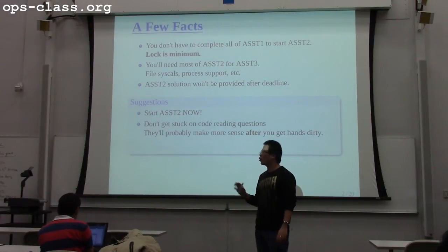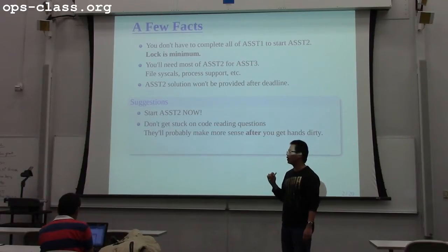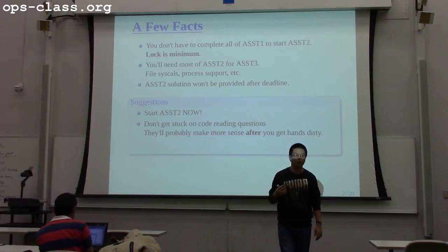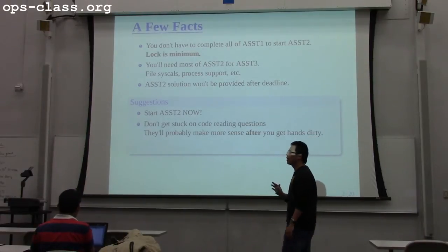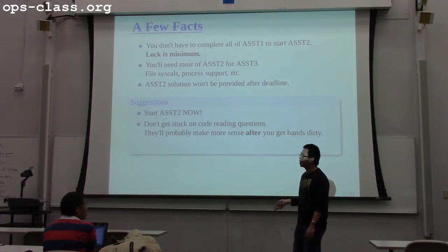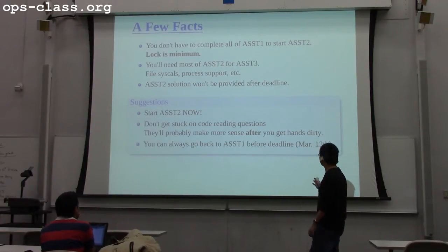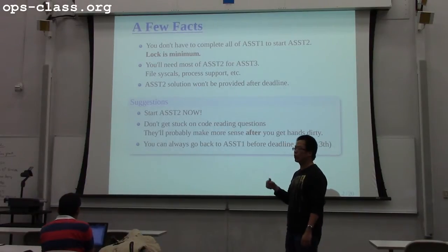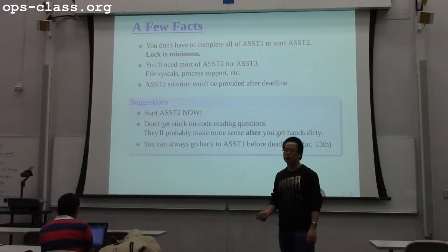Don't get stuck on any code reading questions, because some of the questions will probably make more sense after you have read the code and done some coding. Then you can come back to those code reading questions. There is no separate deadline for the code reading questions, so you can submit them anytime before the main deadline. Before the deadline, which is March 13th, you can always go back to assignment one to finish whatever you have left over, once you've got most of assignment two done.